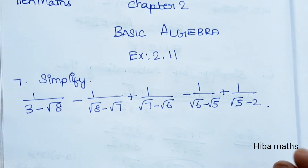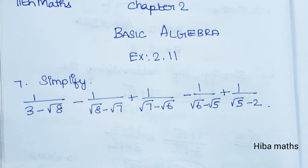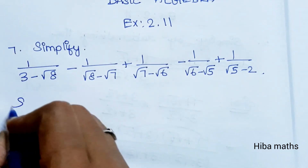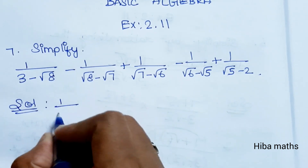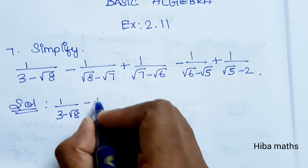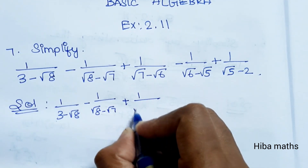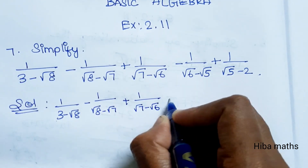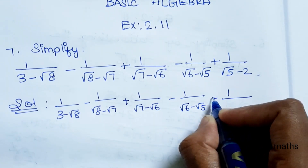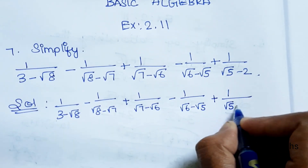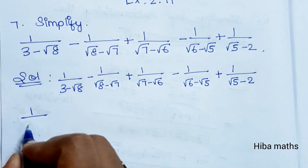We will use conjugates to solve it. We have 5 terms here: 1/(3 - √8), 1/(√8 - √7), 1/(√7 - √6), 1/(√6 - √5), and 1/(√5 - 2). We will apply the conjugate to each term.